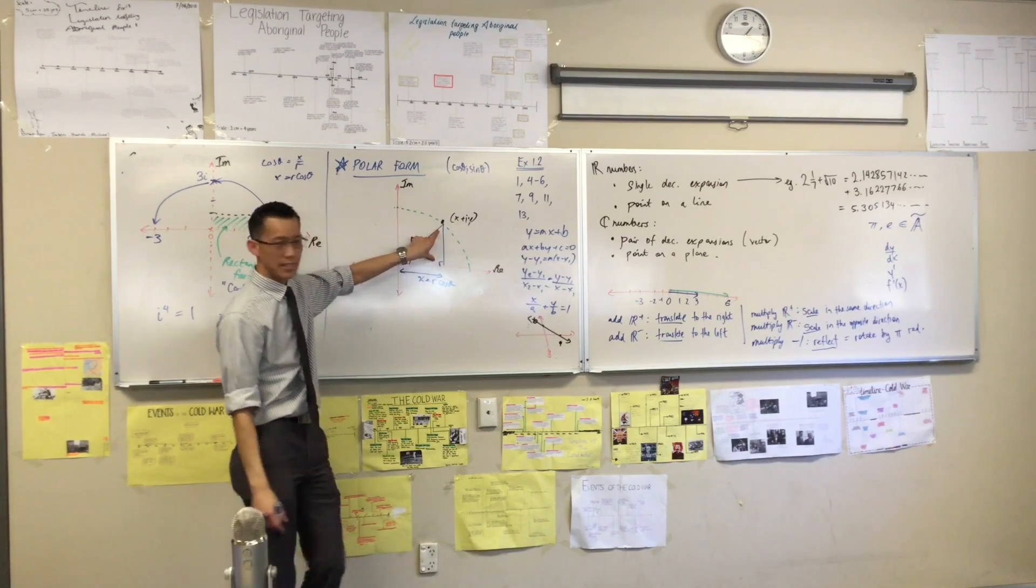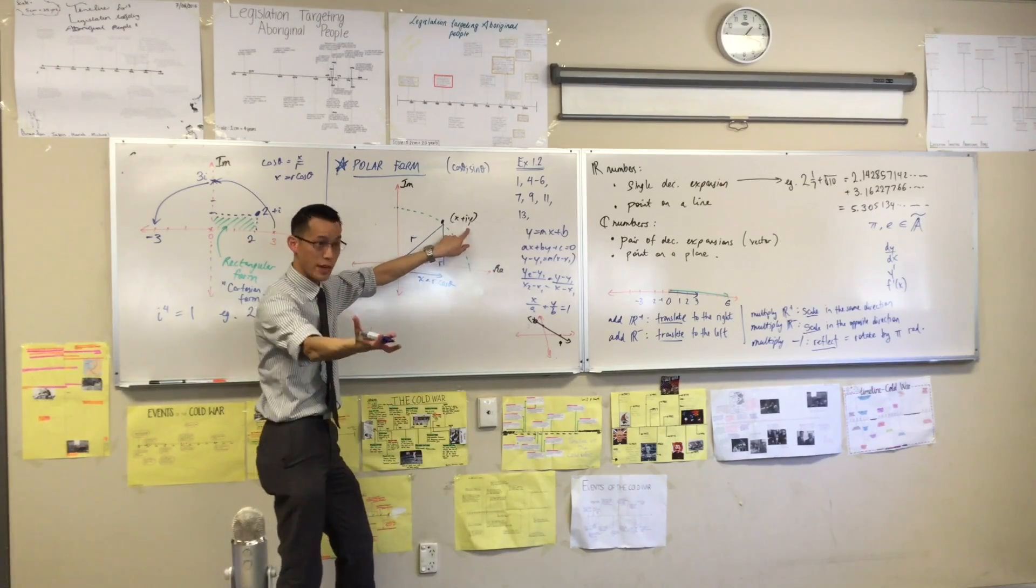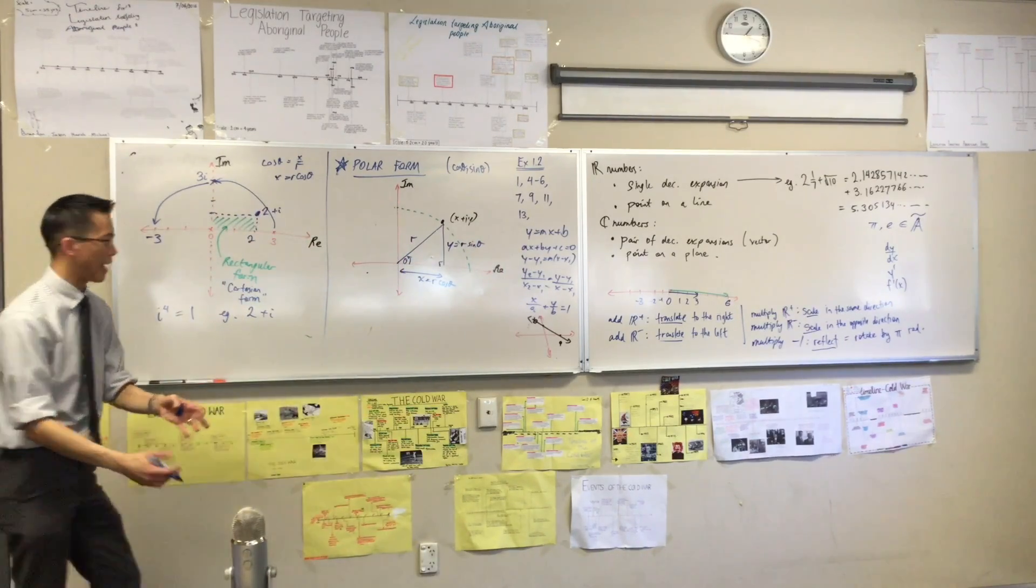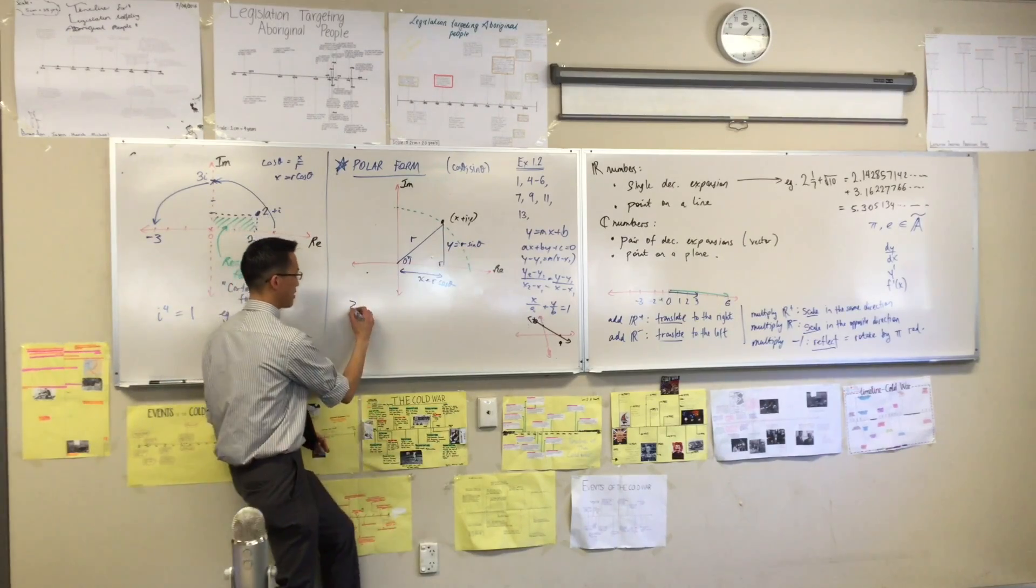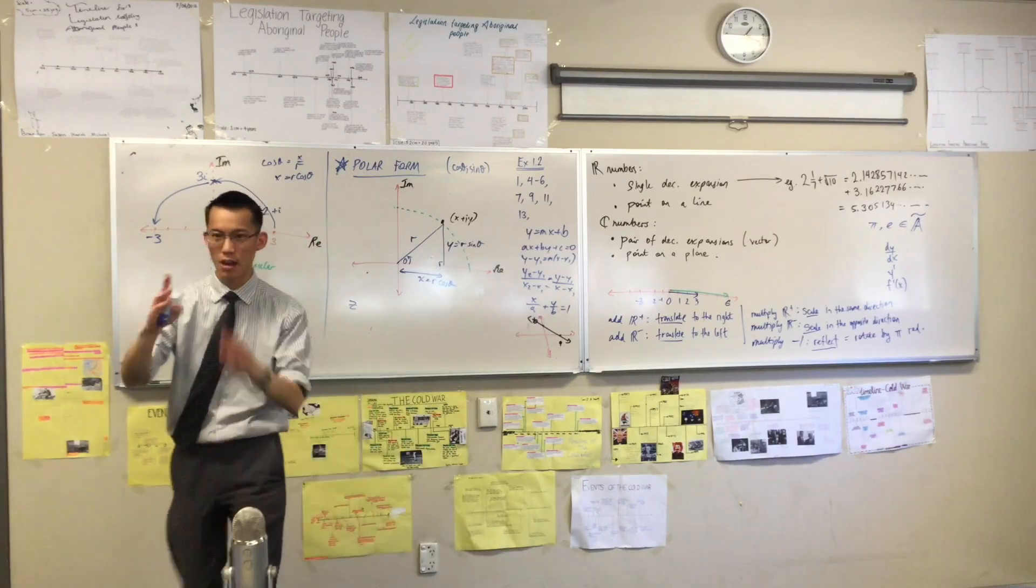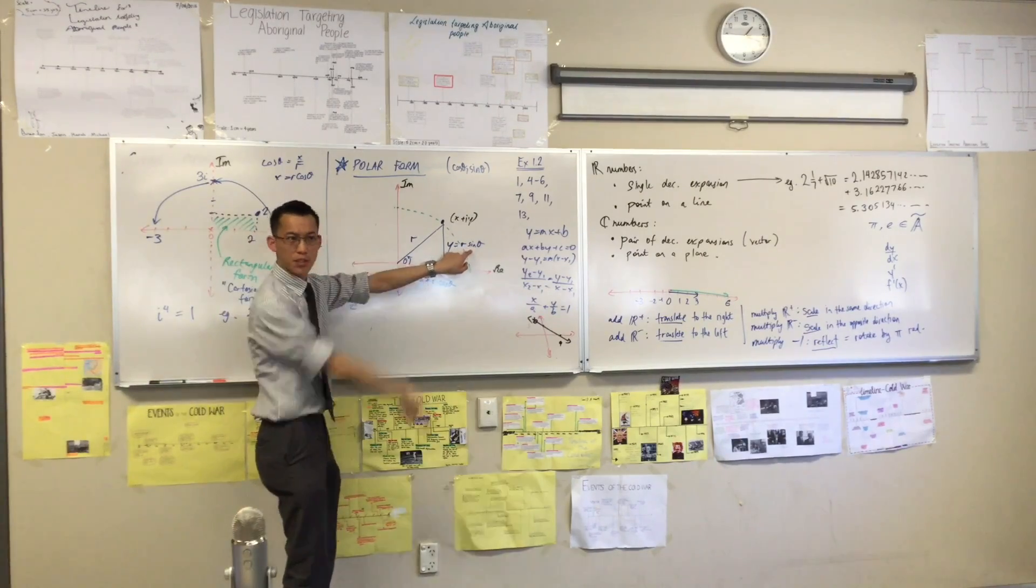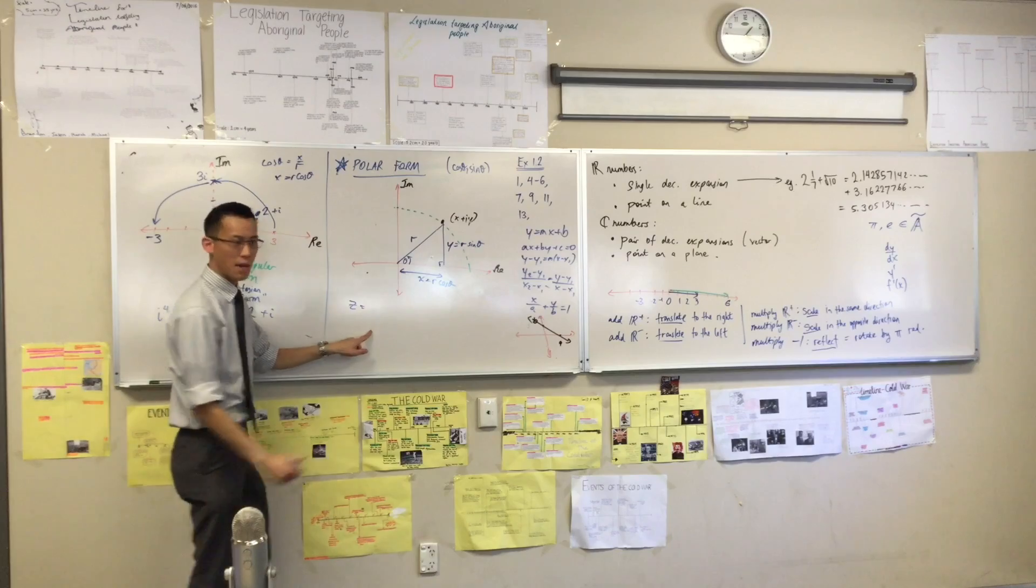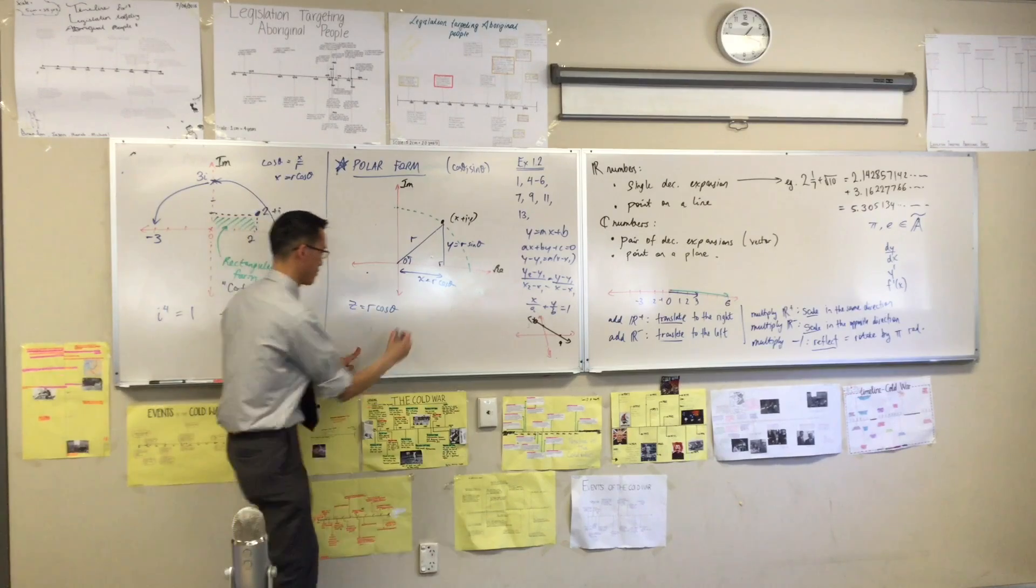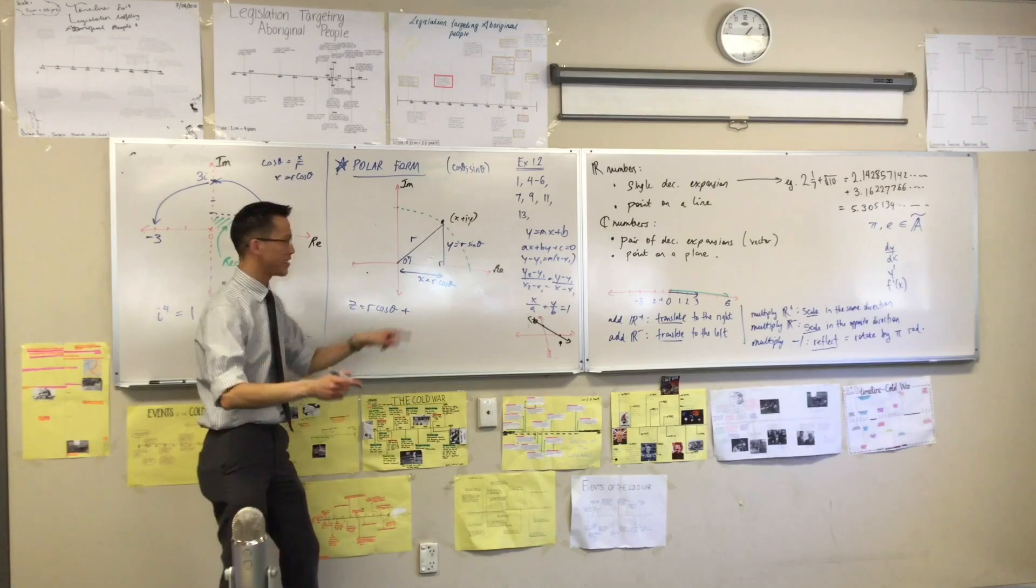So r cos theta is another way that I can write x. And in the same way, what's this distance up here? This is, well, I'm labeling it y, but I can use trig to show in the same way that it is r sin theta, right? Now, it looks more complicated, but using these, I can say, instead of writing it in rectangular form, x plus iy, and my two numbers are horizontal position and vertical position, I can write it using these. I'm just going to substitute them straight in, right? Instead of writing x, I'm going to write r cos theta. Instead of writing iy, I'm going to write i times r sin theta. Does that make sense?